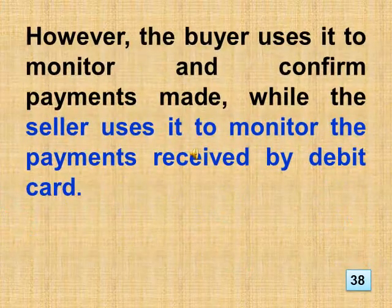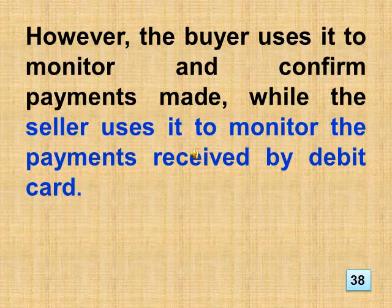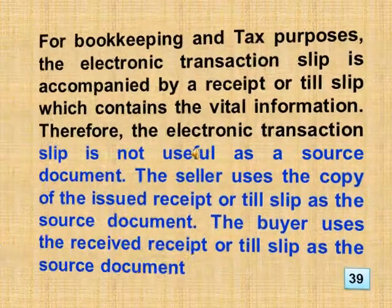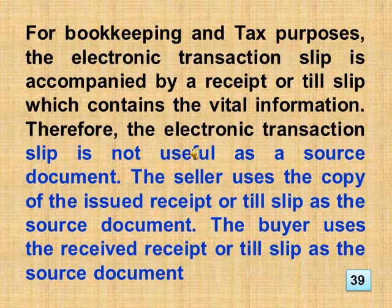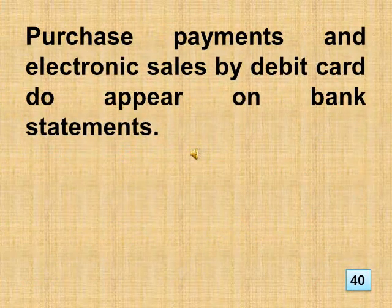However, the buyer uses it to monitor and confirm payments made, while the seller uses it to monitor the payments received by debit card. For bookkeeping and tax purposes, the electronic transaction slip is accompanied by a receipt or till slip which contains the vital information. Therefore, the electronic transaction slip is not useful as a source document. The seller uses the copy of the issued receipt or till slip as the source document. The buyer uses the received receipt or till slip as the source document. Purchase payments and electronic sales by debit card do appear on bank statements.